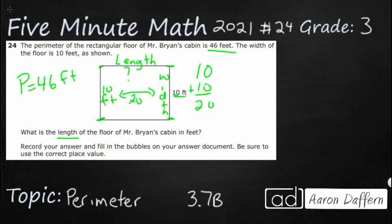How many feet do I actually have left? Remember, the whole perimeter is 46. So if I've got 46 feet and I've already used 20 of them on the widths, then I've got 26 feet left. And I will tell you, this is probably the most common incorrect answer — because the answer is not 26 feet. You've done this far, you've doubled your 10, you've got 20, you've subtracted that from 46, but the answer is not 26.